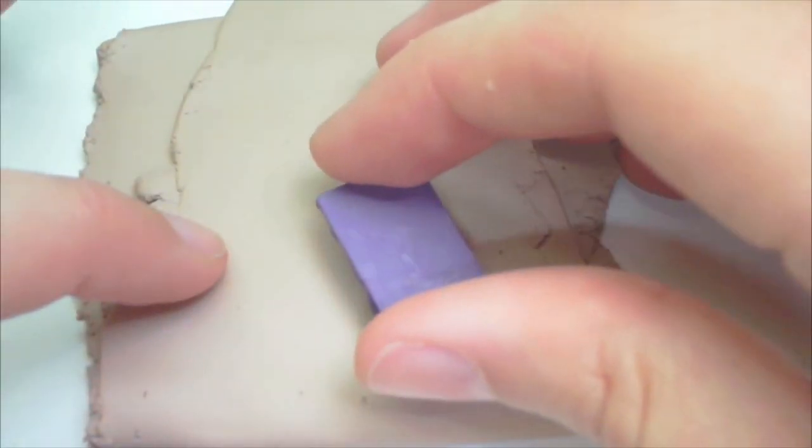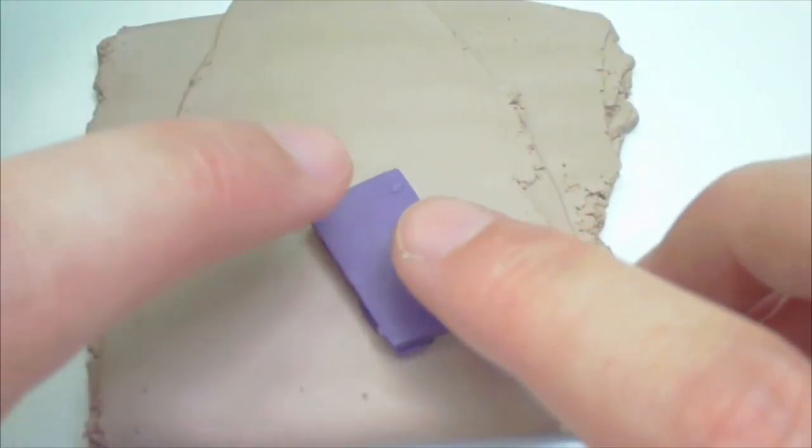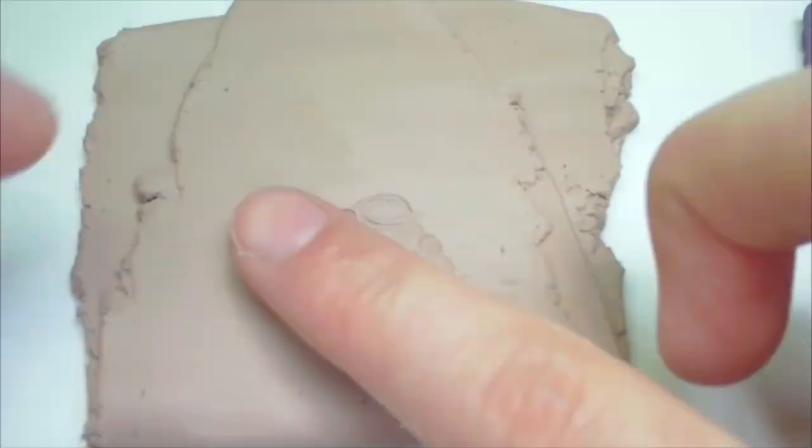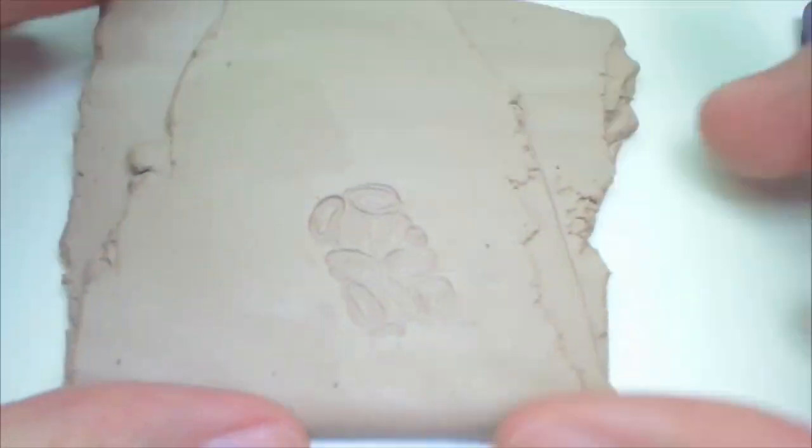Then roll out some more clay in the thickness that you want it to be and press the little texture plate you made into the clay. So you get a little section like this that has the swirly texture.